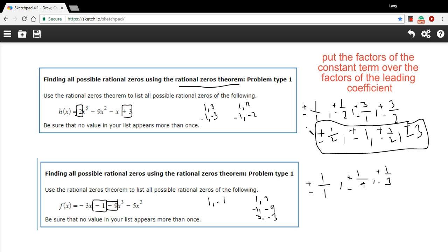If we want to list those in ascending order, we would say ±1/9, ±1/3, and ±1.